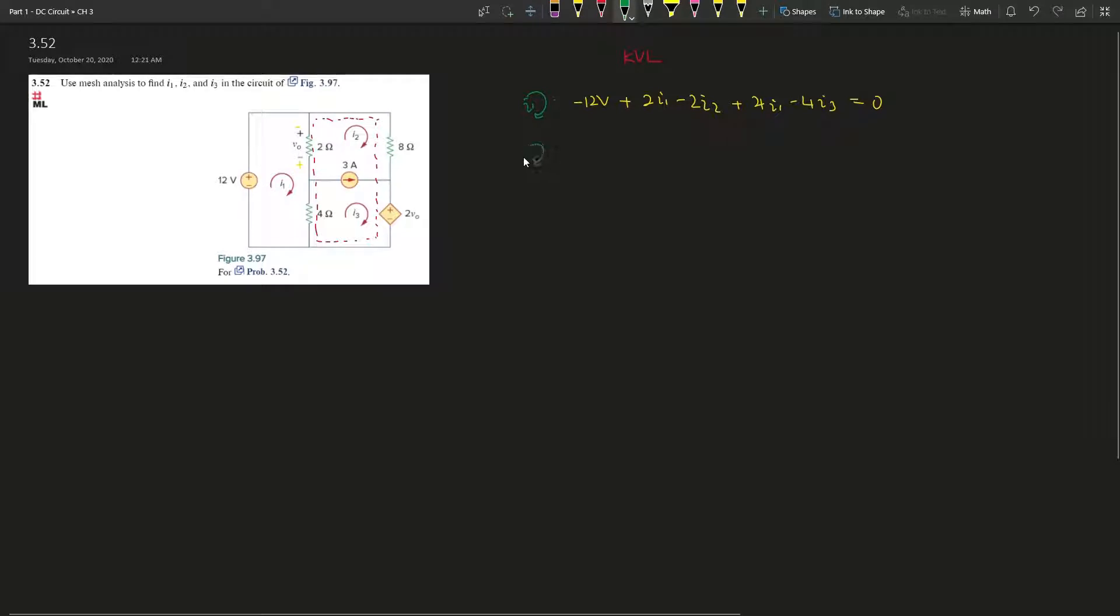All right, so now let's look at IS. IS is i2 plus i3 combined, those two meshes. Start from the top right corner. It doesn't matter where you start, it's just where I picked. So 8 ohms, 8 times i2 plus 2v0, and then plus 4i3 minus 4i1, and then plus 2i2 minus 2i1. This whole thing gives you zero.